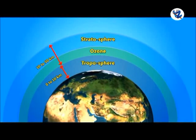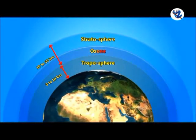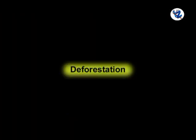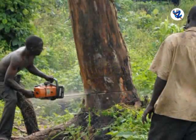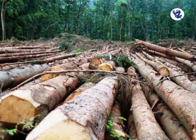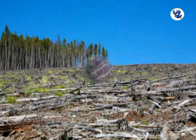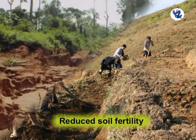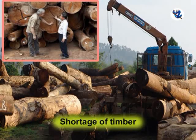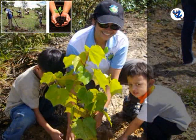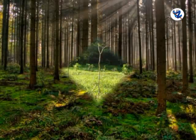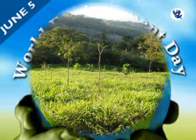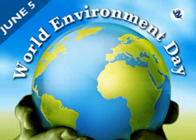In the Antarctic region, there is formation of a large area of thin ozone layer called the ozone hole. Deforestation is the permanent removal, decrease, or deterioration of forests and woodland. The major effects of deforestation are extinction of species, reduced soil fertility, soil erosion, climate change, shortage of timber, global warming, etc. Reforestation is restoring a forest that once existed, and plantation of trees in barren land to improve the environment and ease deforestation. Every year, 5th June is observed as World Environment Day.